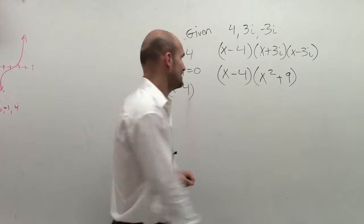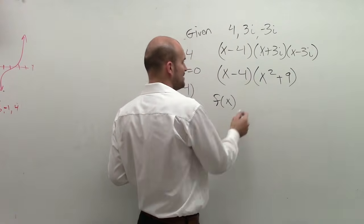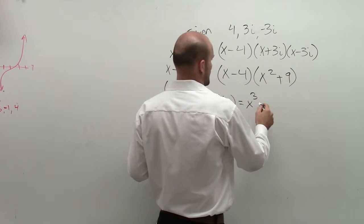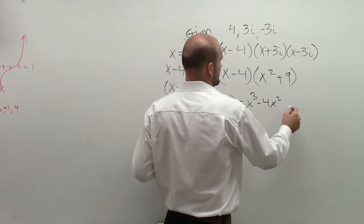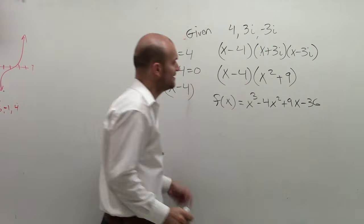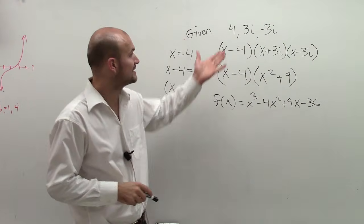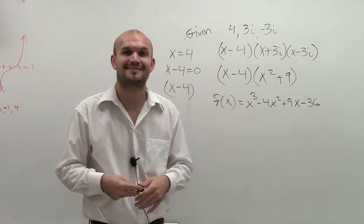Now I need to multiply these two. So I have f of x equals these two binomials multiplied. So I get x cubed minus 4x squared plus 9x minus 36. So there you go, ladies and gentlemen. That's how you multiply when you have given zeros to find your polynomial. Thanks.